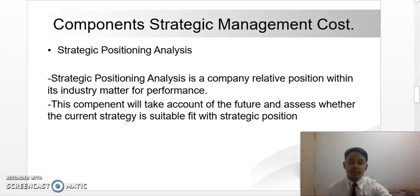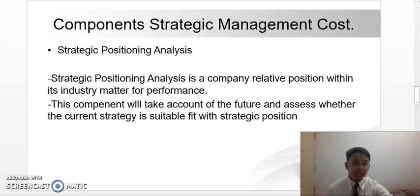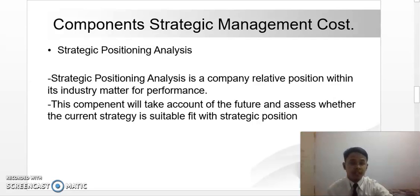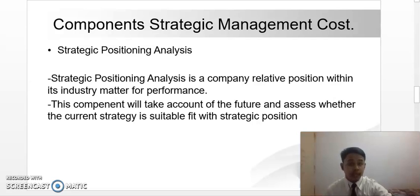There are mainly three components of strategic cost management. The first component is strategic positioning analysis. Strategic positioning analysis is a company's relative position within its industry, material for performance. This component reflects the choices a company made about what kind of value it will create and how that value will be created differently from their rivals. The choices made will also be affected by the external and internal environment. The strategic positioning analysis will take account of the future and assess whether the current strategy is a suitable fit with the strategic position.